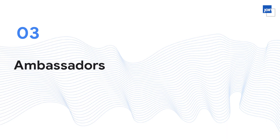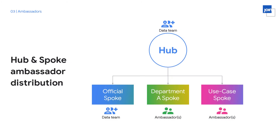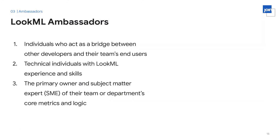Let's talk more about ambassadors and how they fit into our hub and spoke project architecture. The centralized data team owns the hub and the official spoke, since these contain core business metrics and logic used company-wide, whereas the department and use-case-specific spokes are owned by ambassadors — users who are most familiar with that project. An ambassador is an individual who serves as a liaison between the centralized data team, other developers, and their end-users. They're familiar with LookML, understand the overall hub and spoke project architecture, and are the subject matter experts of their team or department's core metrics and logic.